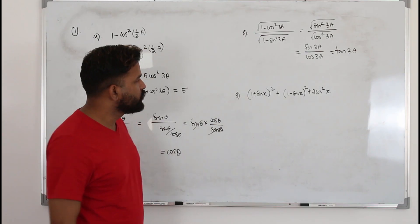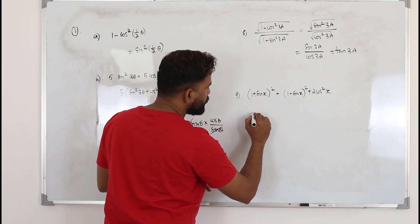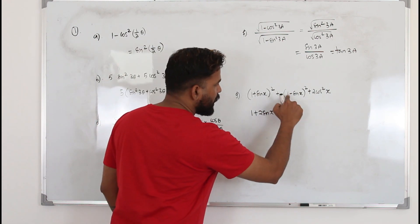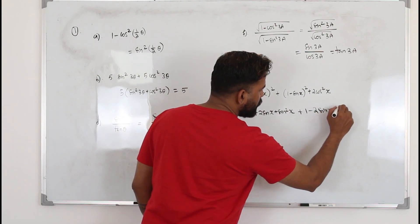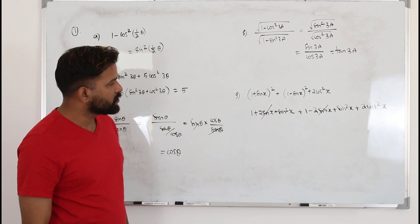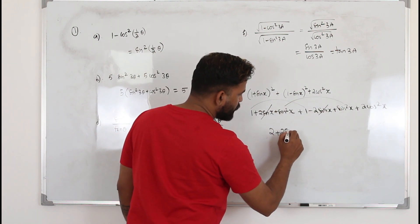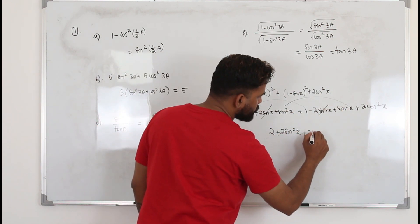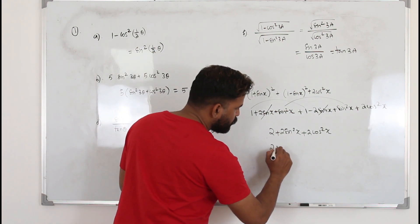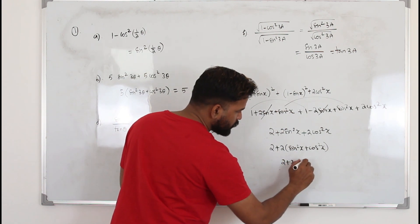For question G, open the brackets. Use (a + b)² = a² + 2ab + b² and (a - b)² = a² - 2ab + b². Adding them together, the 2ab terms cancel. You get sin²x + sin²x = 2sin²x and cos²x + cos²x = 2cos²x. Take 2 as a common factor: 2(sin²x + cos²x) + 2 = 2(1) + 2 = 4. The answer is 4.